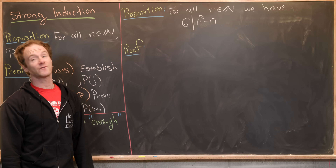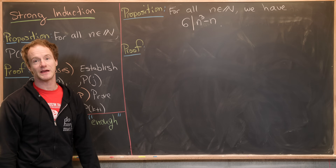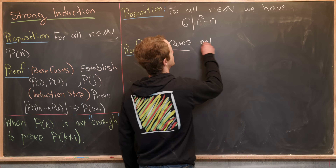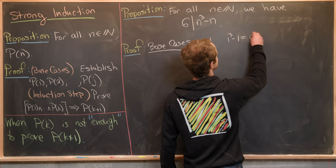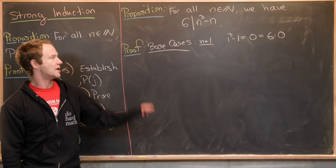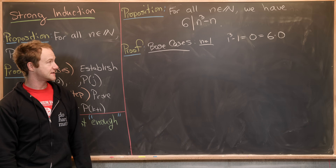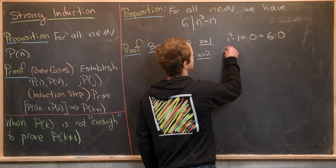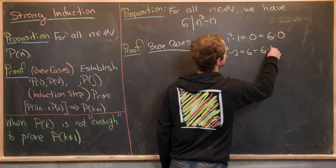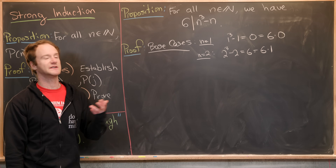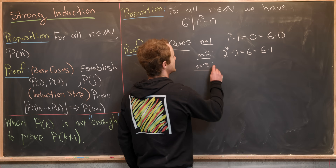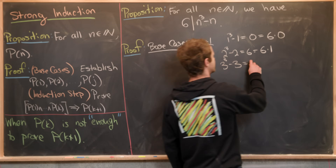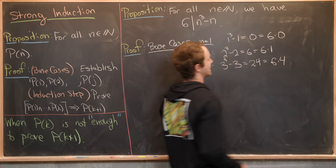Let's check the first three cases. For n=1: 1³ - 1 = 0 = 6·0, which is a multiple of 6. For n=2: 2³ - 2 = 6 = 6·1, divisible by 6. For n=3: 3³ - 3 = 27 - 3 = 24 = 6·4, also a multiple of 6.